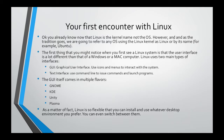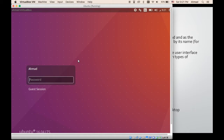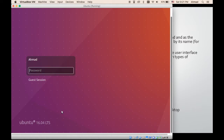Now let's have a look at your first encounter with Linux. We are assuming that you already have Linux installed on a machine. If you haven't installed Linux before, we have a complete section dedicated just for that purpose where we'll install Linux together. We have Ubuntu as an example system. This is an Ubuntu variant of Linux — its latest version at the time of this recording, 16.04 long-term support.